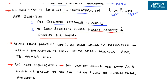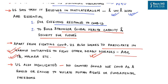The US believes in multilateralism and that the United Nations and World Health Organization are essential — not only for effective response to COVID-19 — but also to build stronger global health capacity and security to fight future pandemics. The US also wishes to participate in initiatives to fight other deadly diseases such as AIDS, tuberculosis and malaria, and highlighted that no country should use COVID-19 as a shield to violate human rights or fundamental freedoms of citizens.